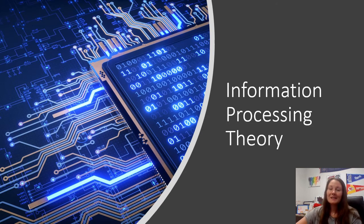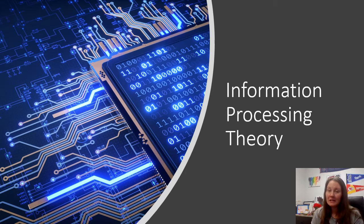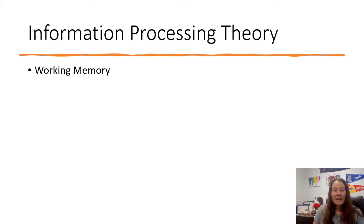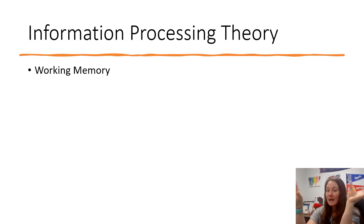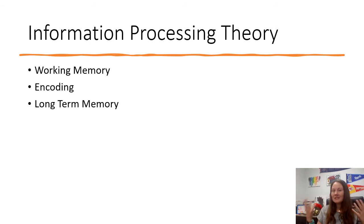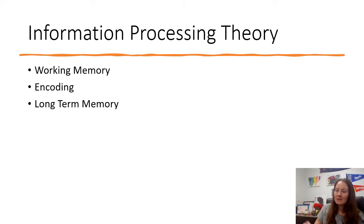This moves us to information processing theory, where we often use a computer as a metaphor for how memory works. Information processing theory covers how humans process, remember, and retrieve information. Working memory holds things we can manipulate in the forefront of our mind — if we don't encode it into long-term memory, we lose it. By rehearsing information enough, we start encoding and storing it in long-term memory.